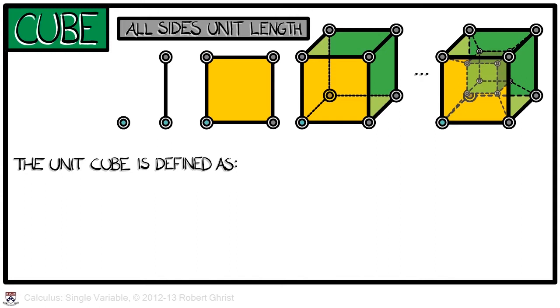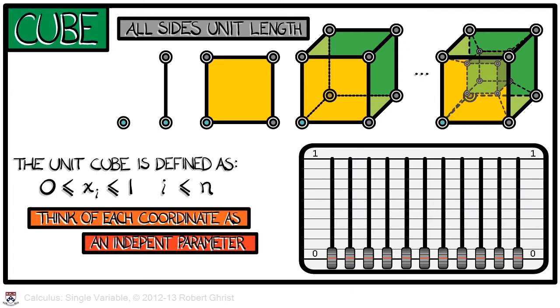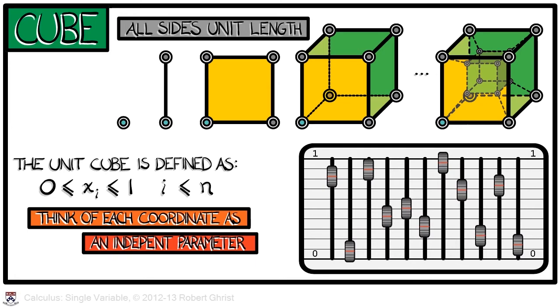Therefore, we'll define the unit n-dimensional cube as those points in n-dimensional space whose coordinates, x sub i, satisfy the inequalities x sub i bigger than or equal to zero and less than or equal to one for all i. How do you visualize that? It's hard to do with your eyes, but you can do it with your hands. If you think of each coordinate as an independent parameter, then it is remarkably similar to what happens when you slide an equalizer or slider bars up and down. Perhaps you've played with something like this on a sound system. Each of those slider bars is like a coordinate in the n-dimensional cube, where n is the number of slider bars. Each can go up or down, independent of the other, until you hit the boundary where it has to stop.